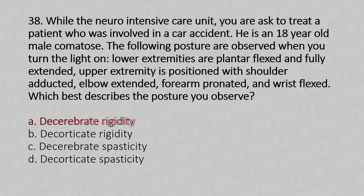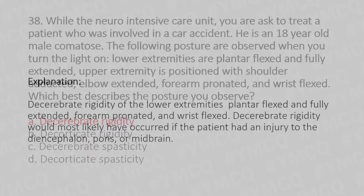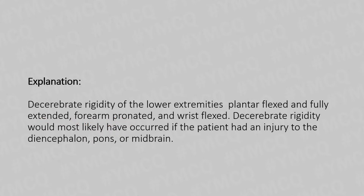Option A: Decerebrate Rigidity. Decerebrate rigidity presents with lower extremities plantar flexed and fully extended, forearm pronated, and wrist flexed. Decerebrate rigidity would most likely have occurred if the patient had an injury to the diencephalon, pons, or midbrain.